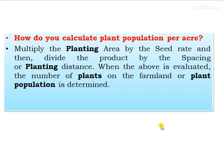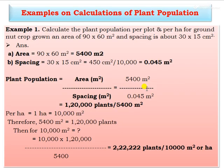Next, how to calculate plant population per acre: multiply the planting area by the actual plot size — for example, 60 by 75 — then divide by the product of the spacing or planting distance. This gives the number of plants on the farmland, i.e., the plant population.